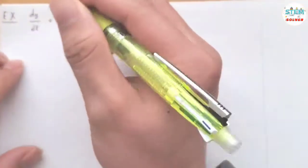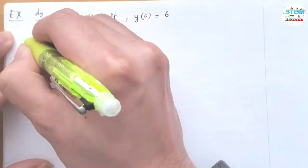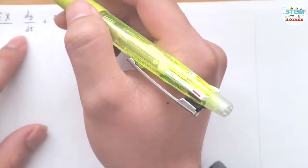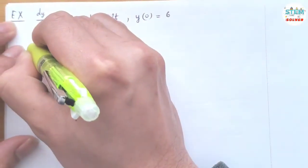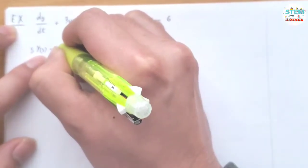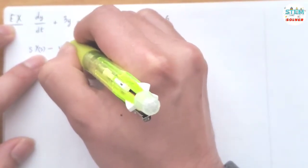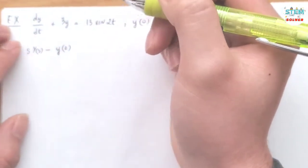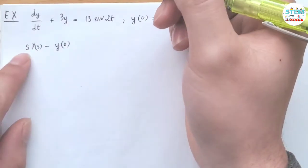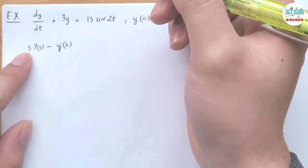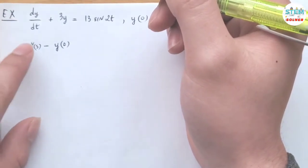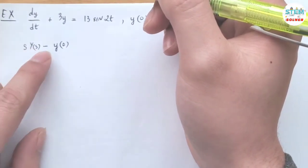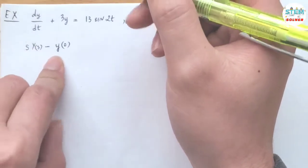dy/dt, which is y prime, transforms to s to the first power times capital Y(s) minus s to the 0 times y(0). You always start with s to the power of the derivative times capital Y(s), then back down to s to the zero.